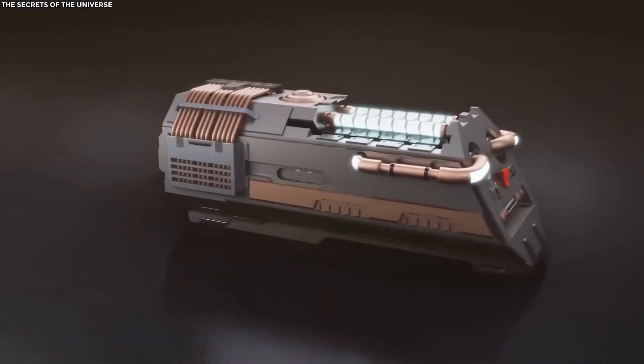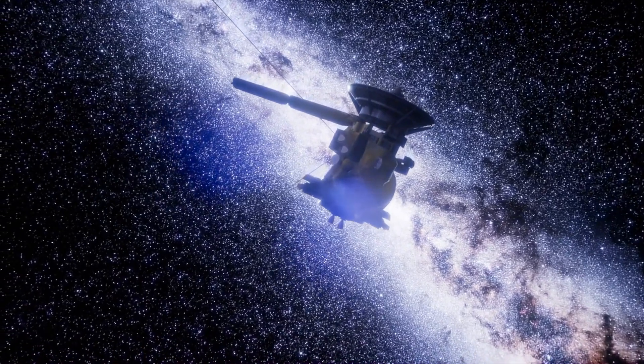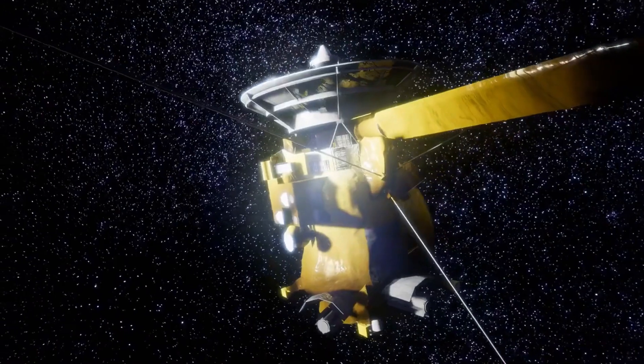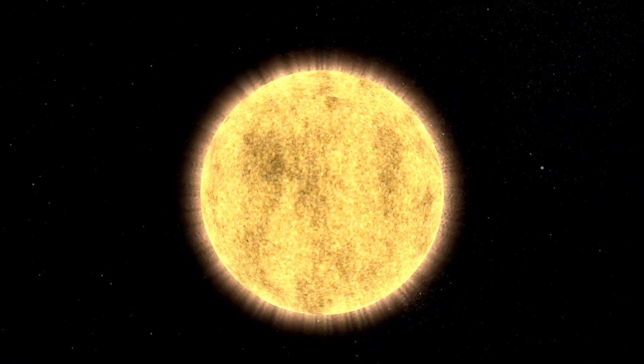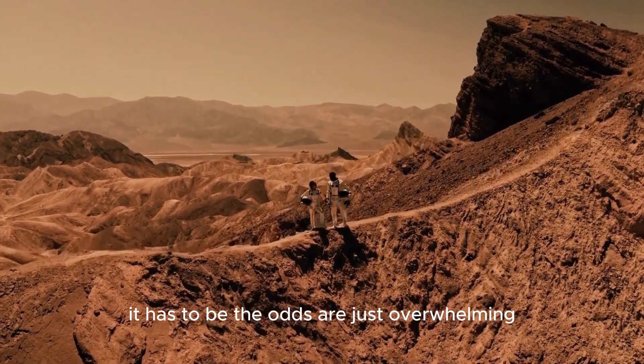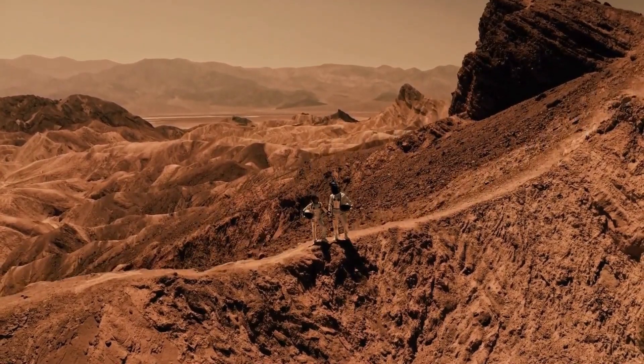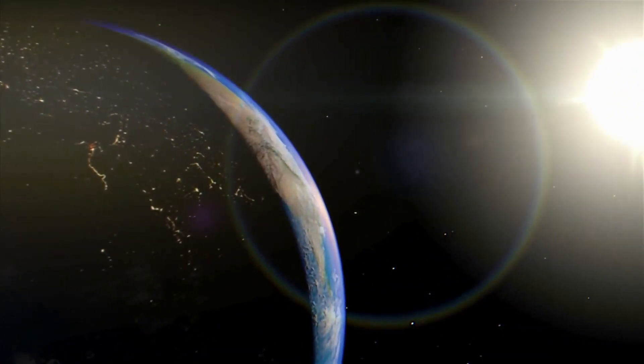Voyager 1 and Voyager 2, launched just weeks apart in the summer of 1977, were first set to explore Jupiter and Saturn. They achieved this mission by successfully studying these gas giants, but they didn't stop there. Voyager 2 went on to make the first-ever close-up observations of Uranus in 1986 and Neptune in 1989. These flybys of four planets earned the mission the name Voyager Grand Tour.